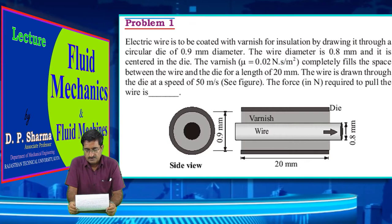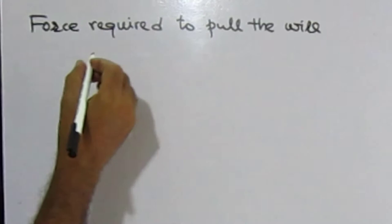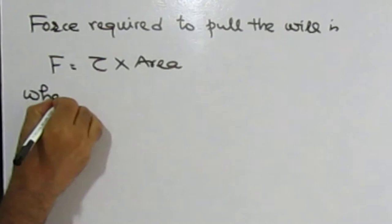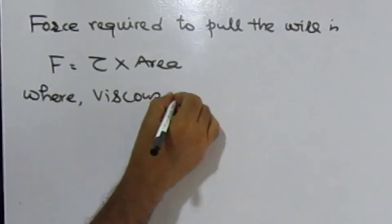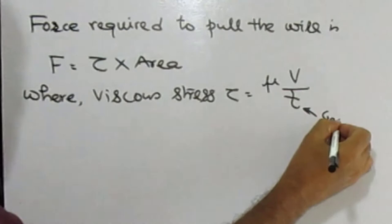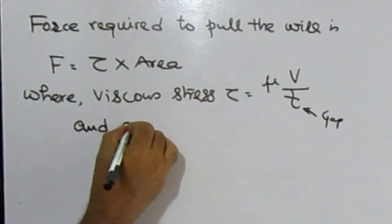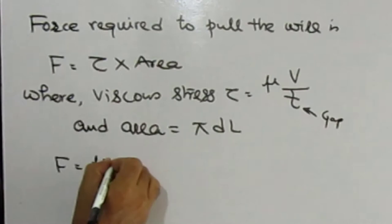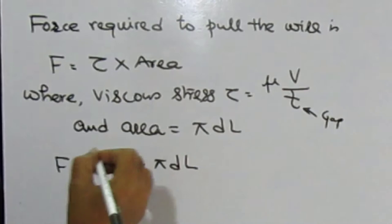This problem is based on Newton's law of viscosity. The force required to pull the wire is F equals tau times area, where shear stress tau equals mu times v divided by t (t is the gap), and area equals pi × d × L. Therefore, F equals mu times v divided by t, times pi × d × L.